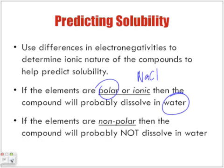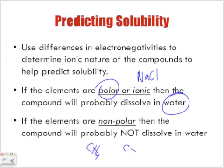If the elements are nonpolar, then the compound will probably not dissolve in water. An example of something that's nonpolar is CH4, methane. If you look at the electronegativity, you'll notice that they're nonpolar, which means neither the C nor the H is slightly positive or slightly negative, which means they will not dissolve in water.